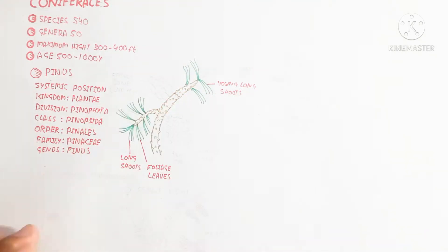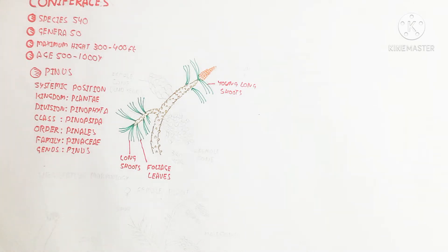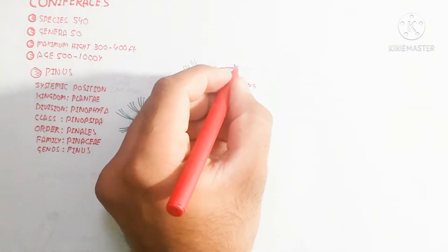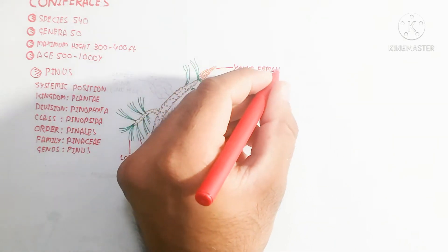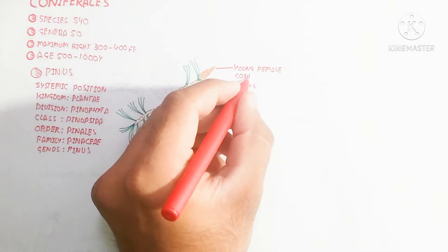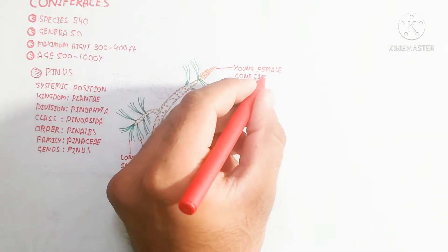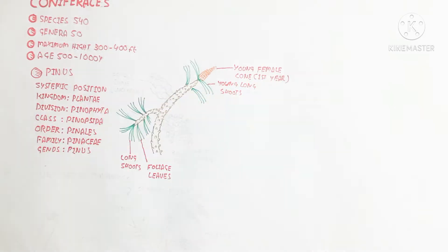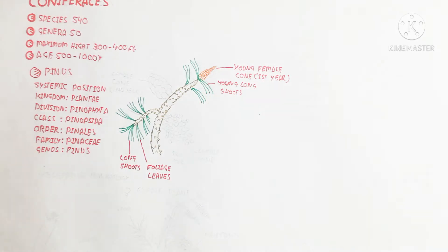The foliage leaf is attached with spurs. The long shoot contains many spurs which attach the foliage leaves. Here is the young female cone — the young long shoot is attached with it.